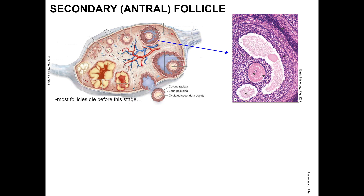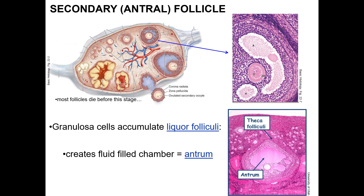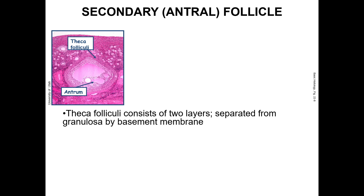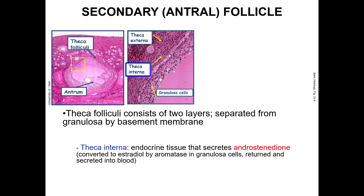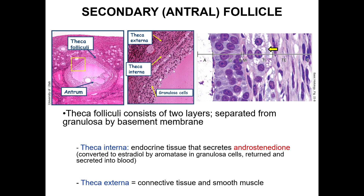The major change in the secondary follicle is the formation of fluid termed liquor folliculi, which accumulates in intracellular spaces in the granulosa, forming a chamber called the antrum. At the start of each ovarian cycle, 5 to 12 antral follicles will be selected to continue growing. At this stage, the theca folliculi differentiates into two layers: an inner theca interna that secretes the androgen androstenedione, which granulosa cells transform into estradiol via the enzyme aromatase, and the outer theca externa, consisting of fibroblasts and smooth muscle cells. Both layers are vascularized, and cells of the theca interna contain characteristic lipid droplets of steroid hormone-producing cells.